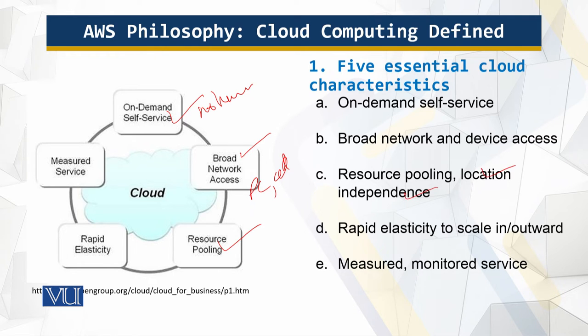Location independence: the customer generally has no control or knowledge over the exact location of the provided resources, but may be able to specify location at a higher level. Then we have rapid elasticity.